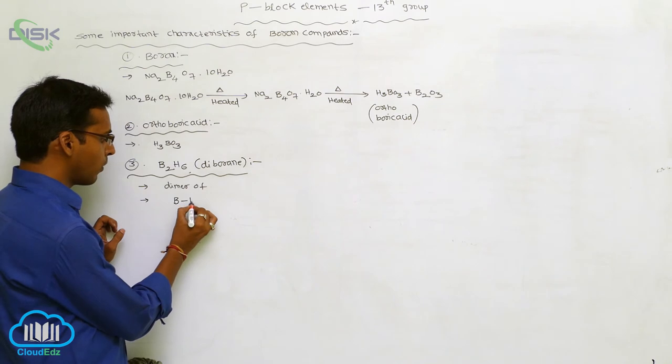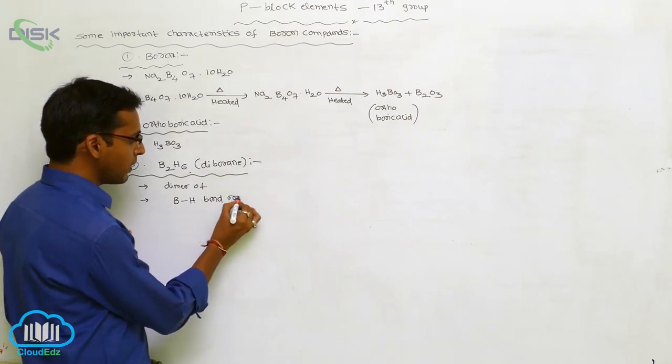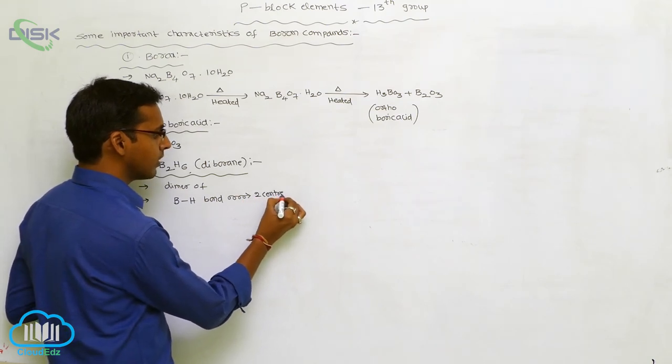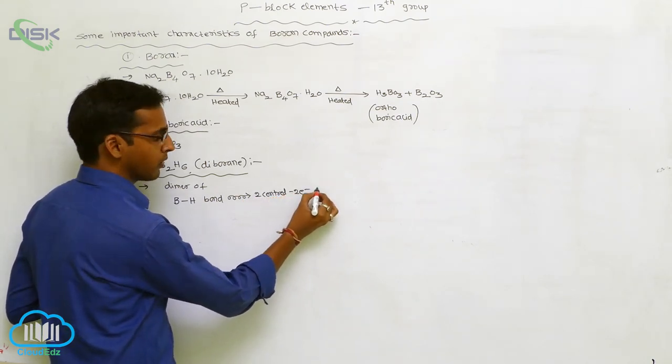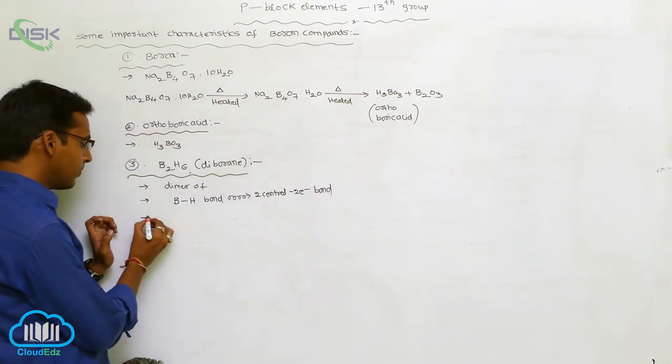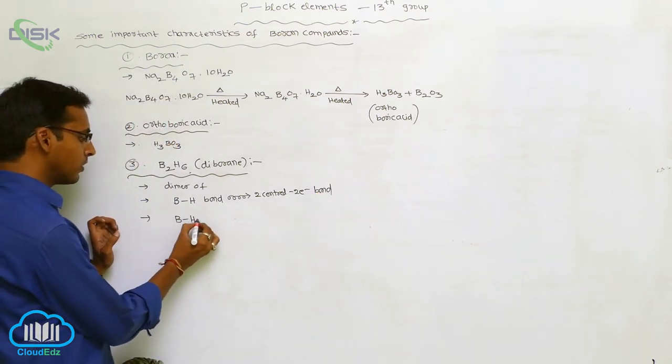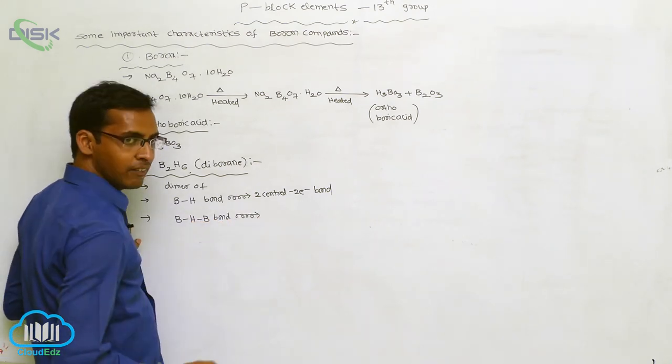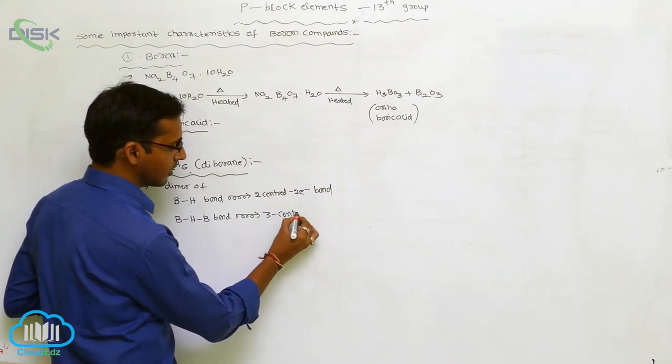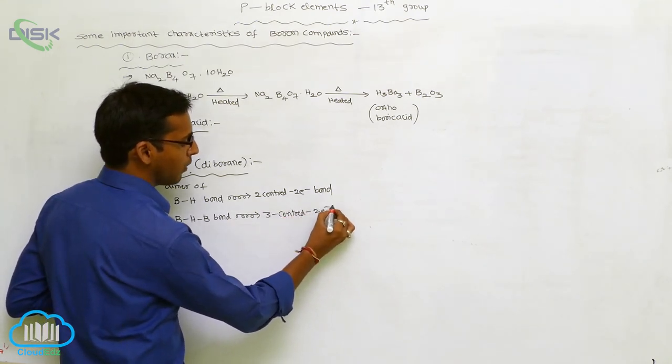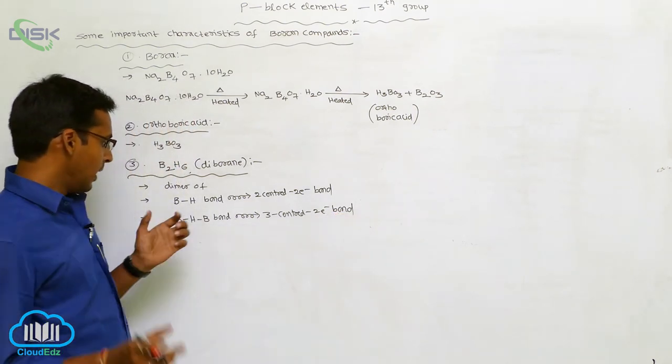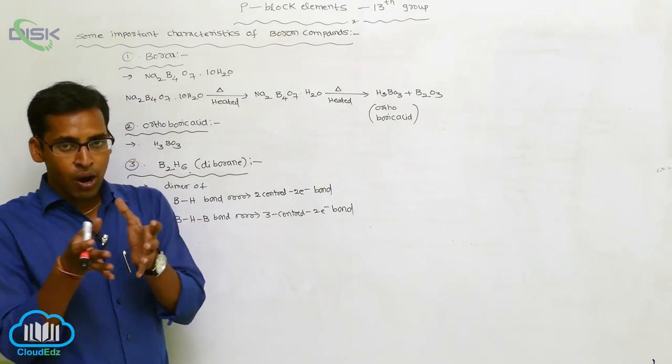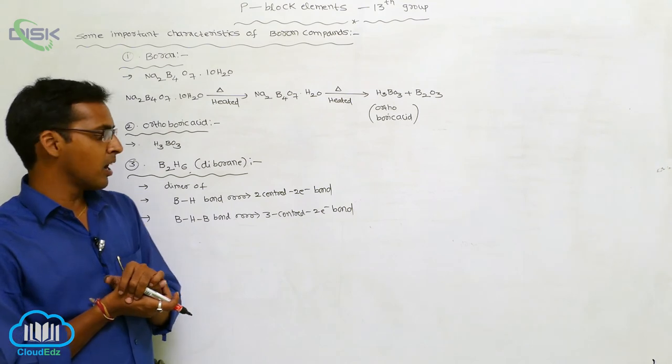Two hydrogens are above plane, forming a BH bond. This BH bond shows two-centered two-electron bond. And the BHB bond has three-centered two-electron bond. So the BH bond is two-centered two-electron, whereas BHB bond connectivity is three-centered two-electron.